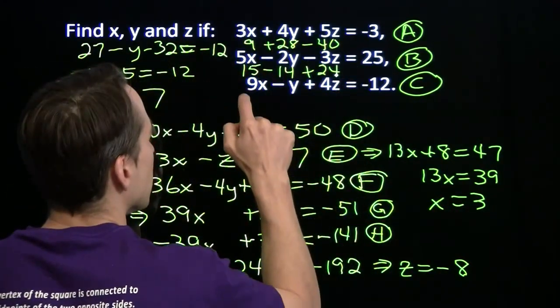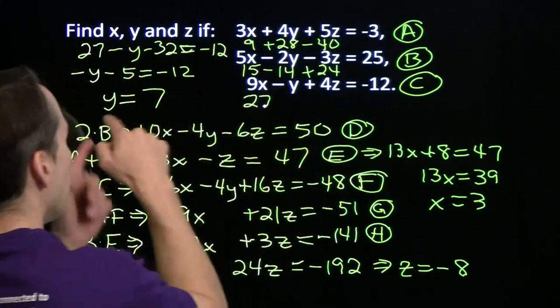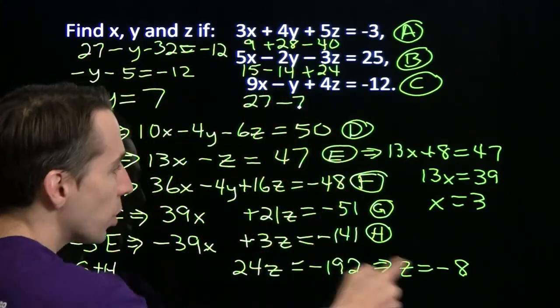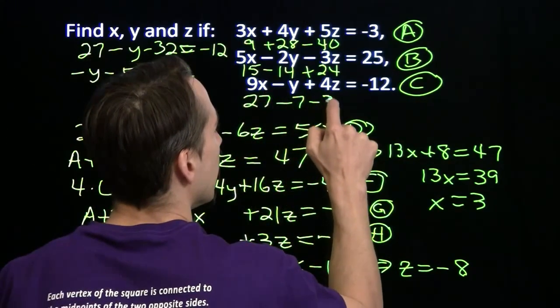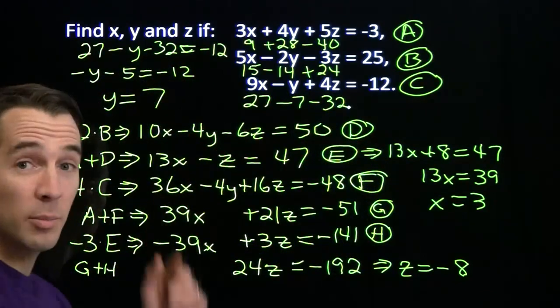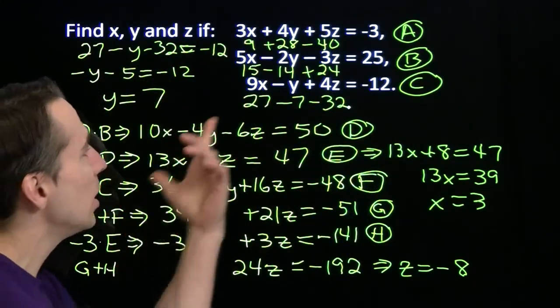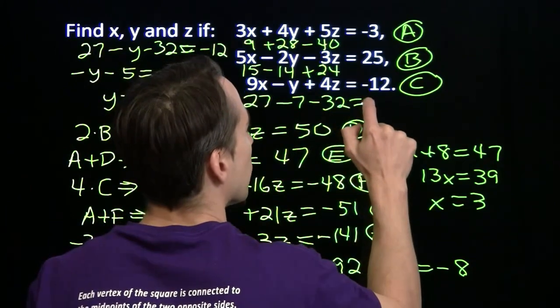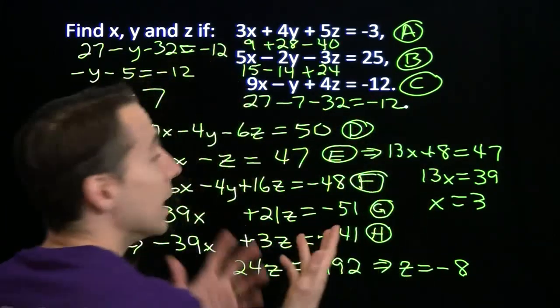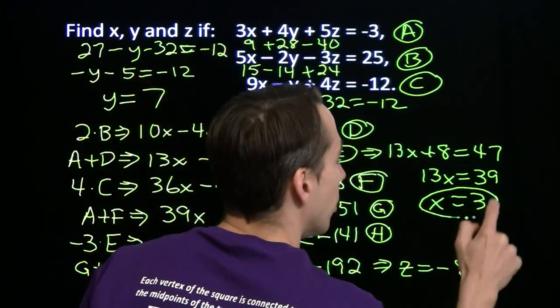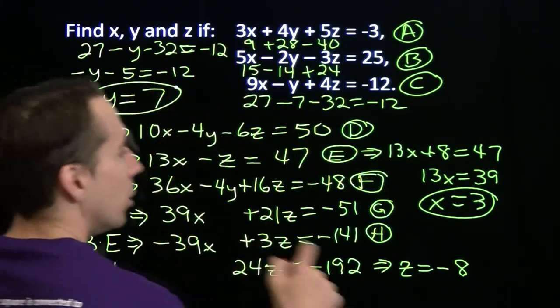9 times x, 9 times 3 is 27, minus 7 plus 4 times minus 8, that's minus 32. 27 minus 7 is 20, minus 32, that gives us minus 12. It all works out, so we have found our solutions.